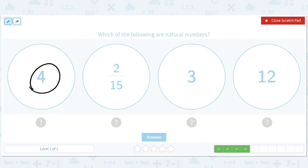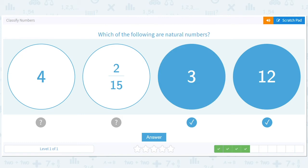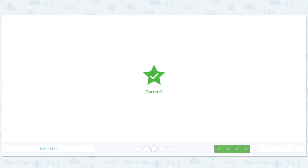So we have 4, 3, and 12. Those are all natural numbers. This is fun. It's fun checking on the circles like that.